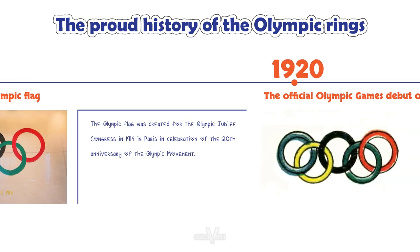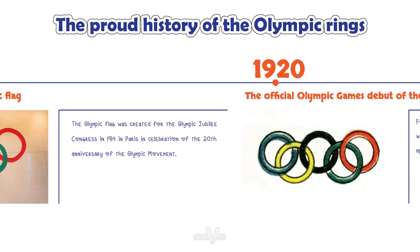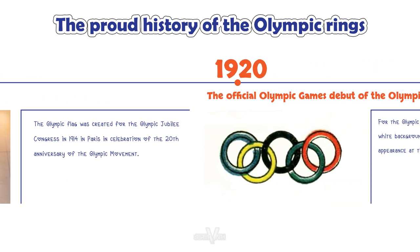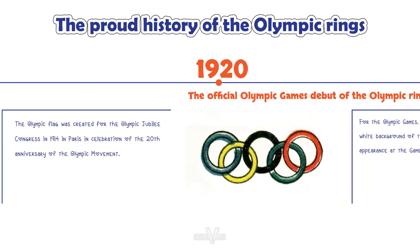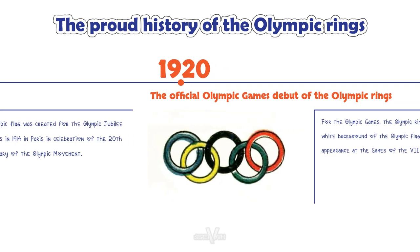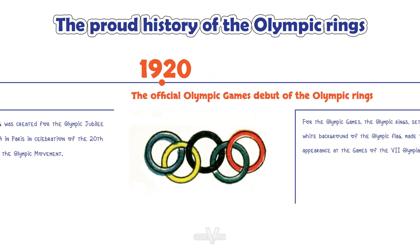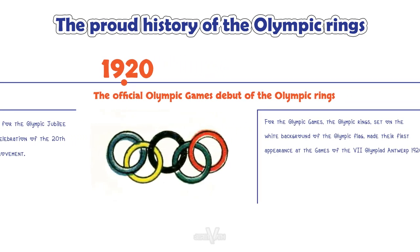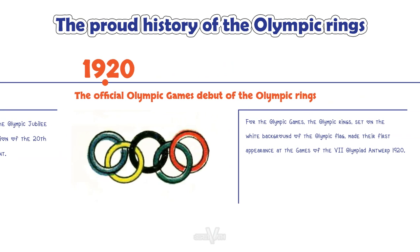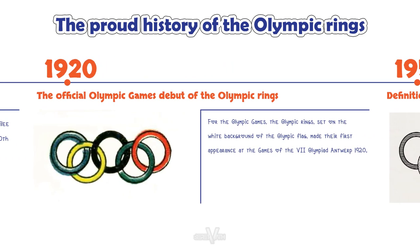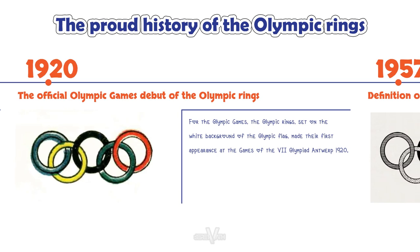1920: The official Olympic Games debut of the Olympic rings. For the Olympic Games, the Olympic rings, set on the white background of the Olympic Flag, made their first appearance at the Games of the VII Olympiad, Antwerp 1920.